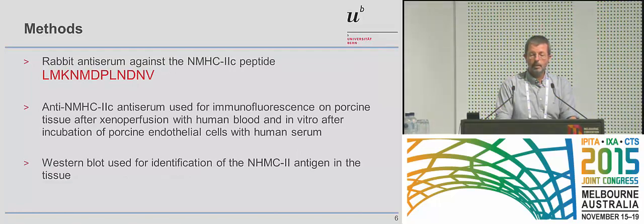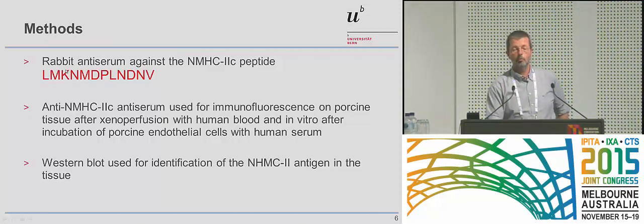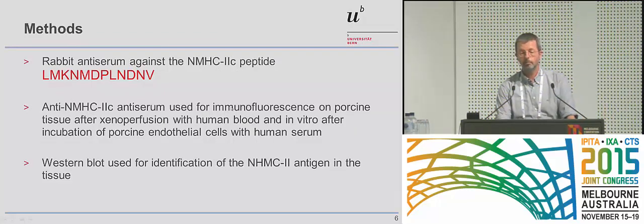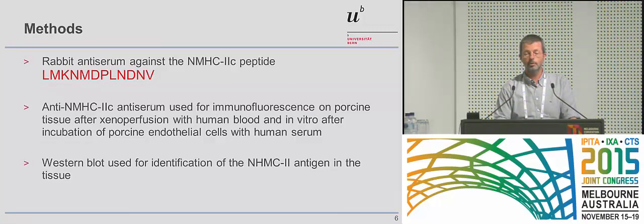What we did is we took the sequence published by Mike Carroll's group — a 12 amino acid peptide — and we got a commercial antiserum against this peptide, which should be directed to NMHC2C. We used this NMHC2C antiserum for immunofluorescence on porcine tissue after xenoperfusion with human blood, and also after incubation of porcine endothelial cells with human serum. We also used Western blot to identify the NMHC2 antigen in the tissue.